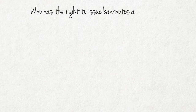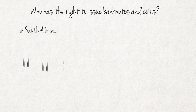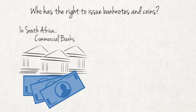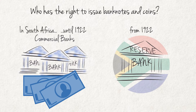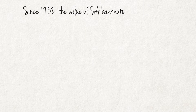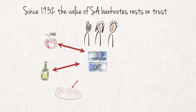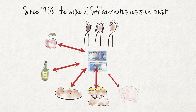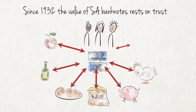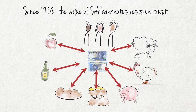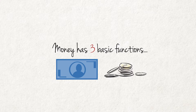Who has the right to issue banknotes and coins? In South Africa, commercial banks issued banknotes until 1922, when the function was taken over by the SA Reserve Bank — the country's central bank, established in 1921 for this purpose. Since 1932, the value of South African banknotes rests on trust. When a person accepts a banknote in exchange for goods and services, there is reasonable trust that it will again be exchangeable for goods and services of similar value, or accepted as a deposit by a commercial bank with similar value reflected in a bank account.